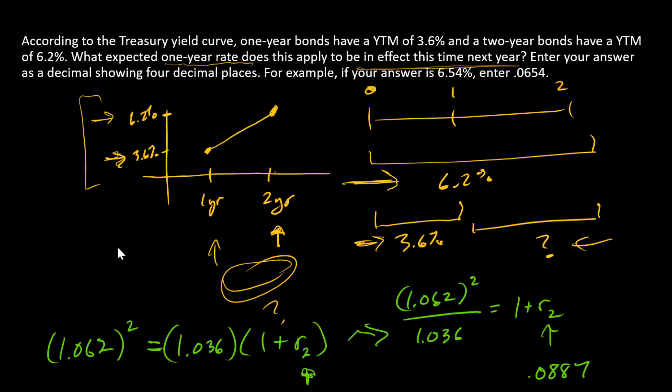It makes sense that this number is bigger than 3.6%. Why is that? Because in order to get a two-year average return of 6.2% per year, starting with 3.6% in the first year, we've got to have a really high number in that second year.